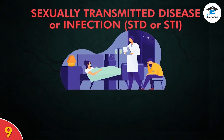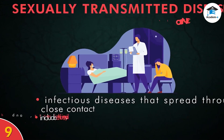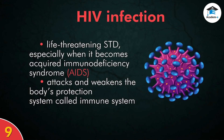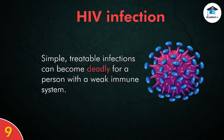Sexually transmitted diseases or infections (STD or STI) are infectious diseases that spread through intimate close contact. Some STDs include chlamydia, genital warts, and human immunodeficiency virus (HIV) infection. HIV infection is one of the life-threatening STDs, especially when it becomes acquired immunodeficiency syndrome (AIDS). HIV attacks and weakens the body's protection system called the immune system. Simple, treatable infections can become deadly for a person with a weak immune system.